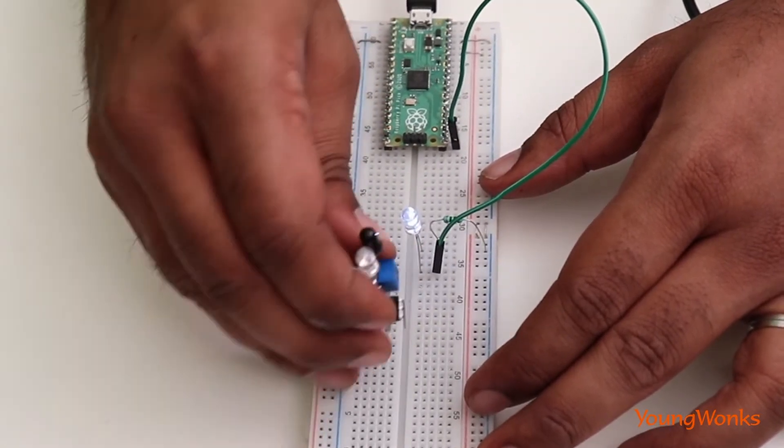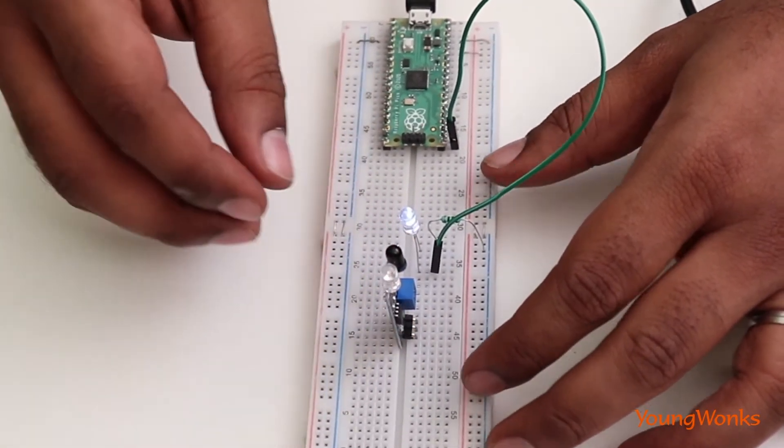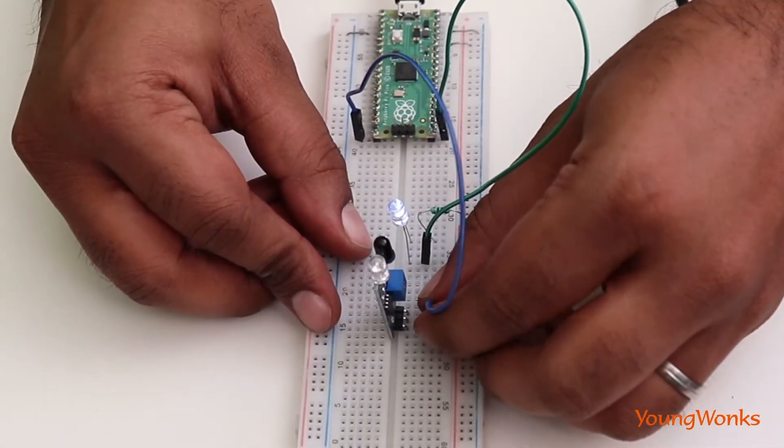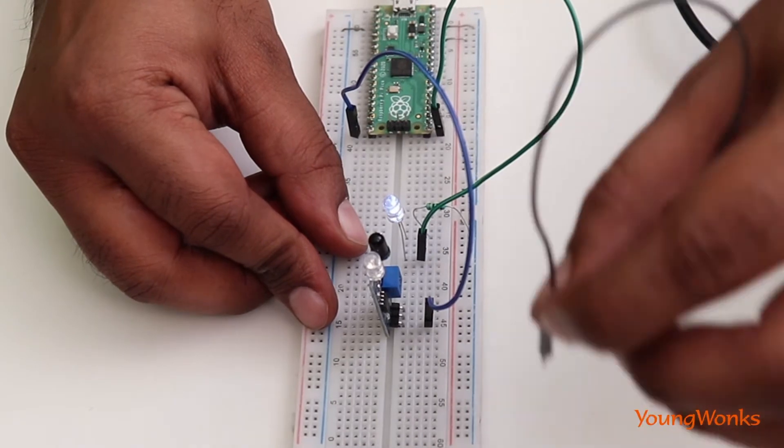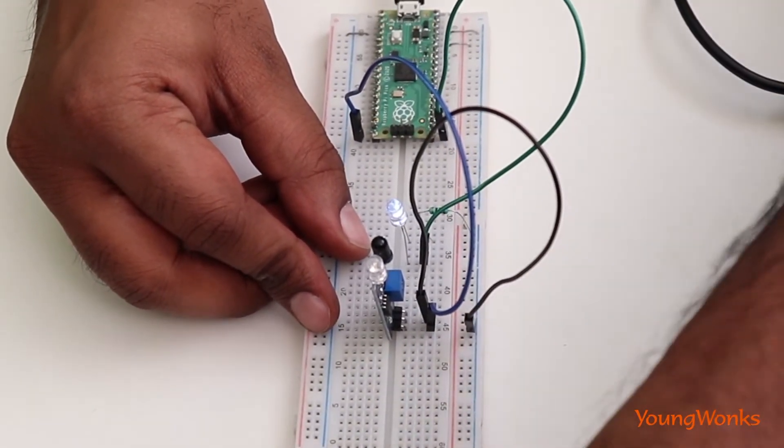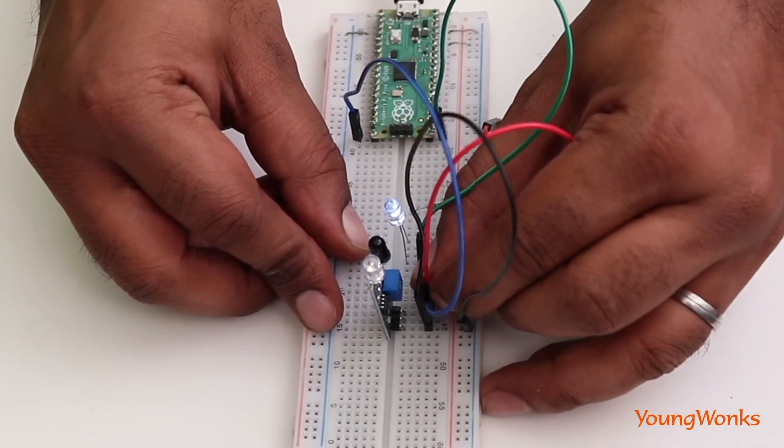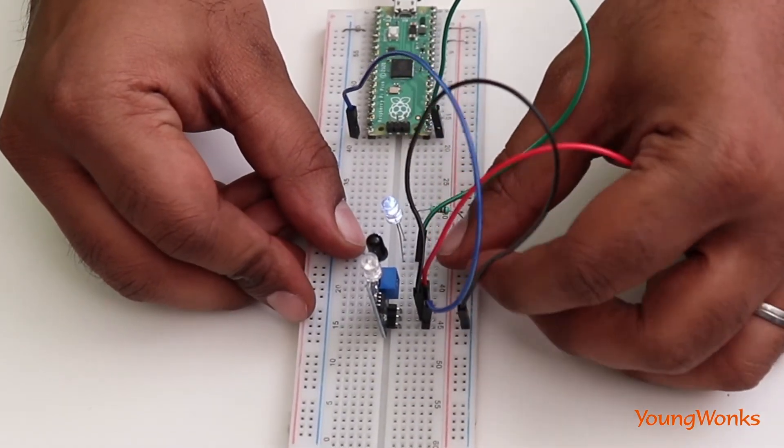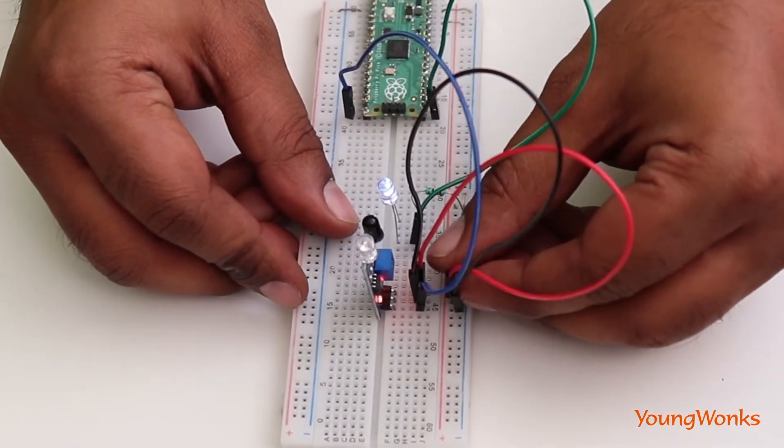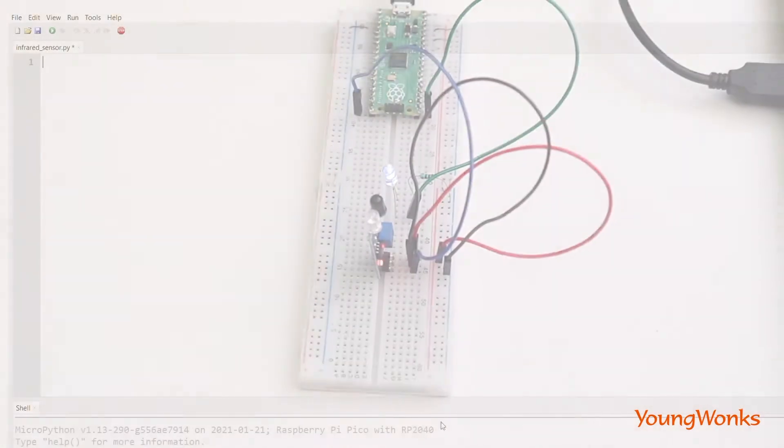We then plug in the infrared sensor. This has three terminals: VCC, ground, and output signal. We connect the output signal to a GPIO pin configured as an input. We then connect the ground pin to the ground power rail, and VCC or power to the side rail, which is connected to the power of the Raspberry Pi Pico.